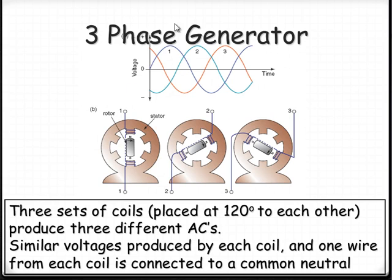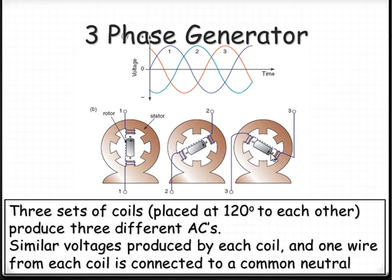Three-phase electricity: if we have a coil at each of three positions around the alternator, then we're going to experience maximum induction occurring at point one, then at point two, then at point three. Every 60 degrees of the circle hits a peak, and after 180 degrees we get the reverse peak. We've got electricity being produced out of three different places, all slightly out of phase with each other.